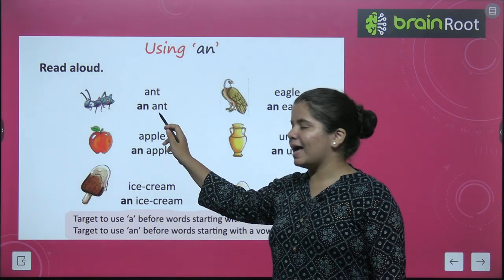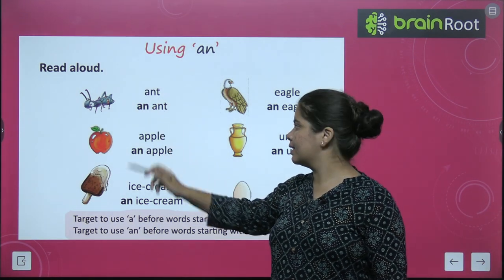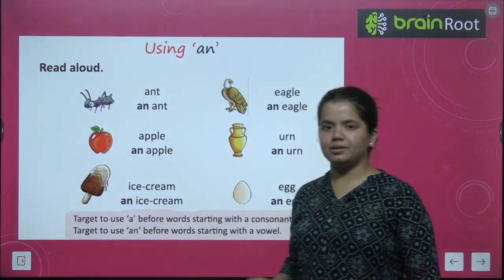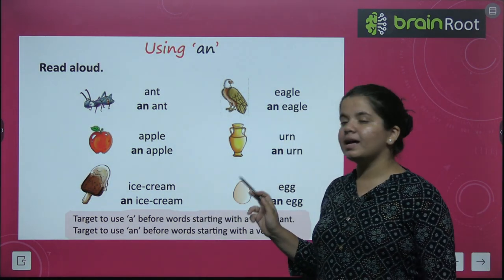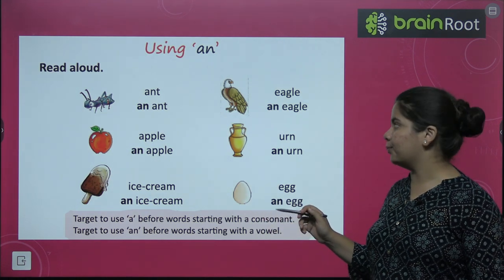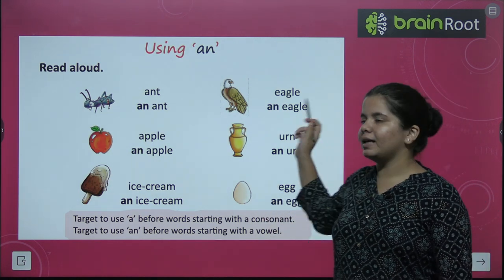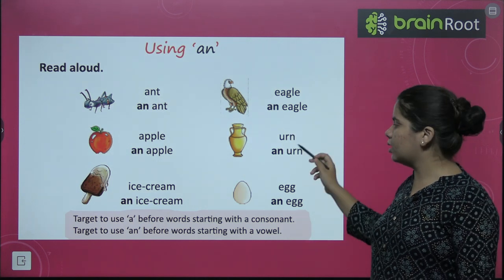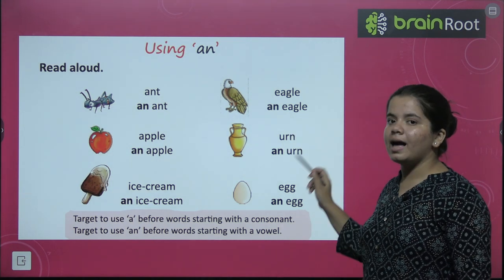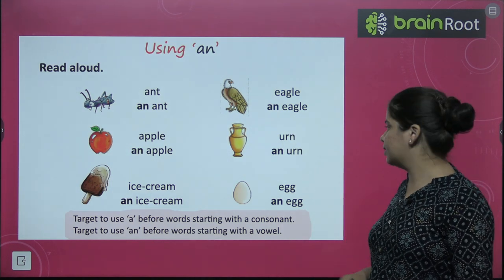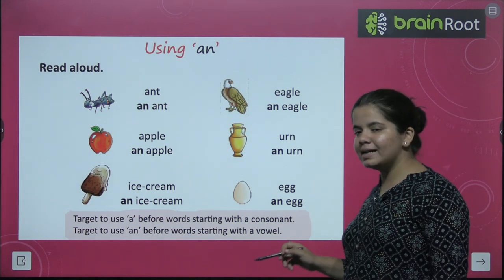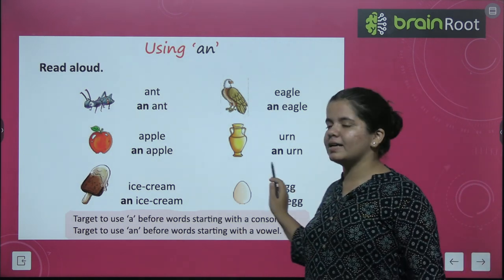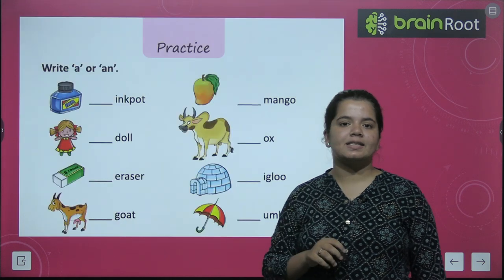An ant. Apple — an apple. Ice cream — an ice cream. Eagle — an eagle. Earn — an earn. Egg — an egg. Look, these are all vowels. This is why we use An with them.